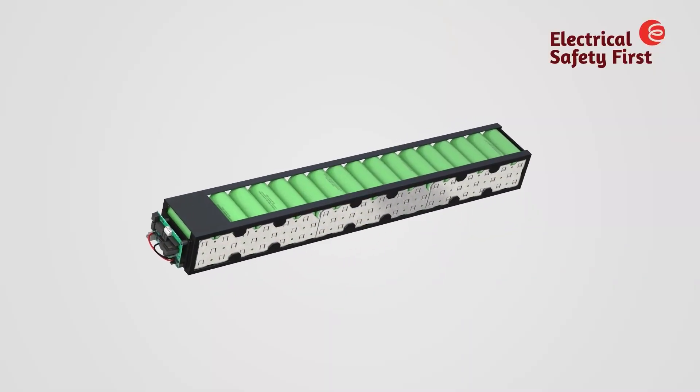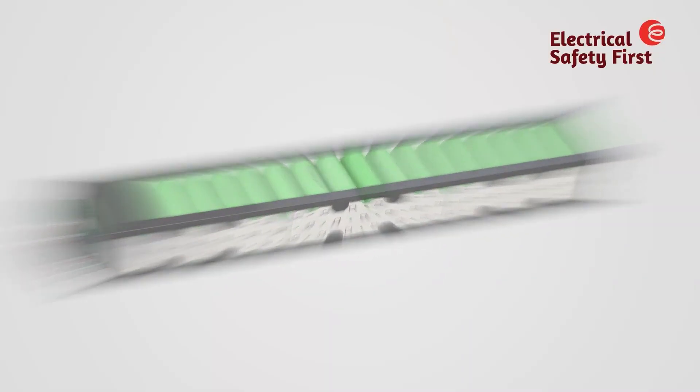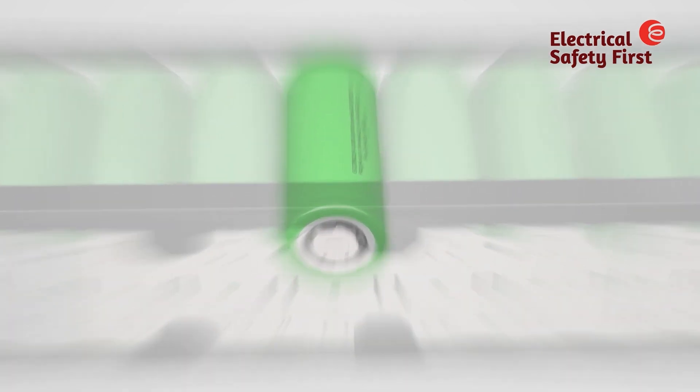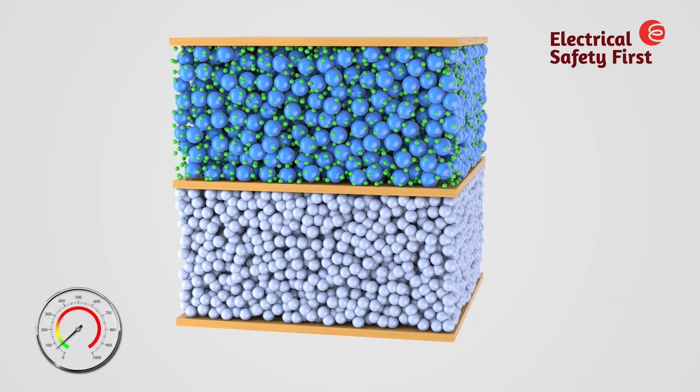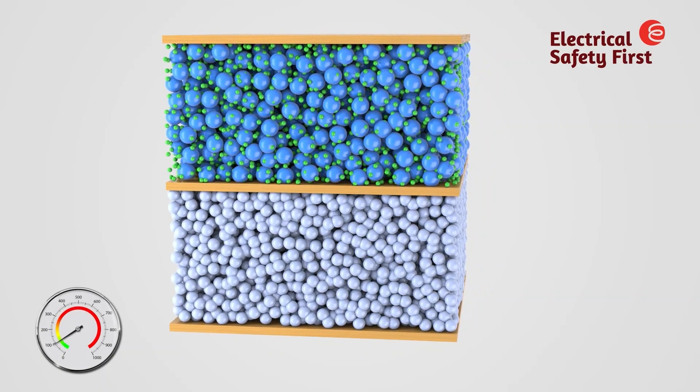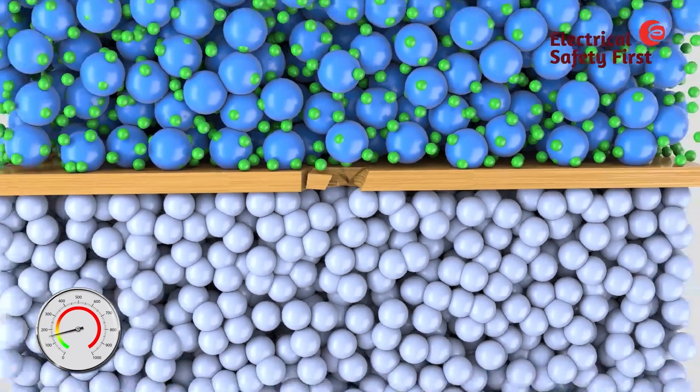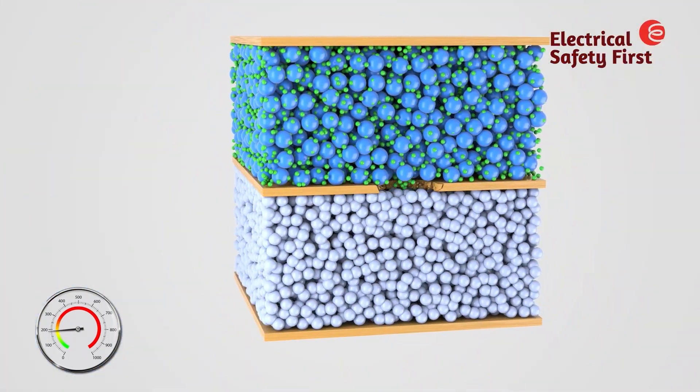Thermal runaway begins when the battery suffers some kind of abuse that causes the battery to rapidly release its stored energy in the form of heat. When the heat generated by the battery exceeds its ability to dissipate the heat, the temperature within the battery starts to rise. If the cause of excessive heat is not removed,